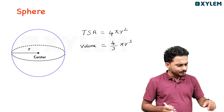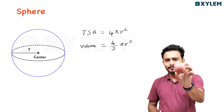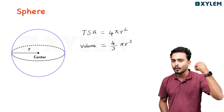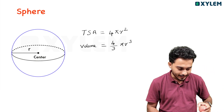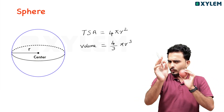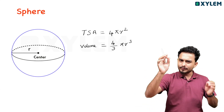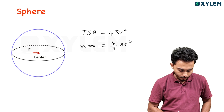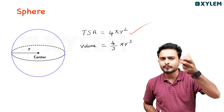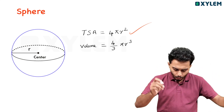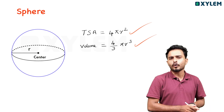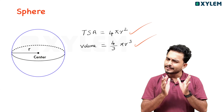We are going to start with sphere. A ball is a sphere. The radius goes from center to the surface. Total surface area of sphere = 4πR squared. Volume of sphere = 4/3 πR cubed. These are the key formulas.